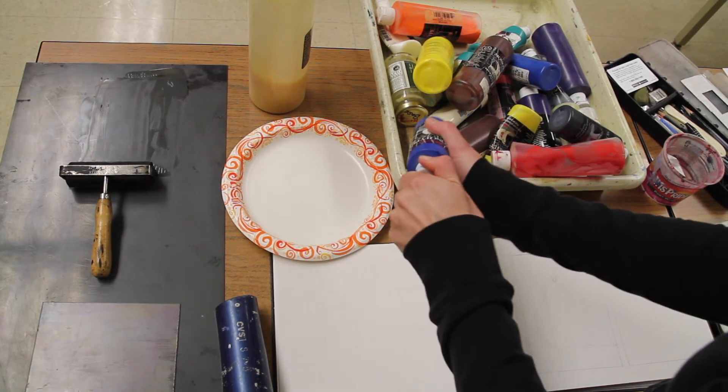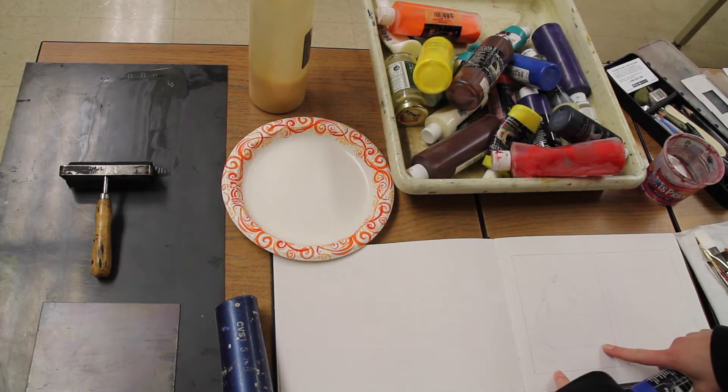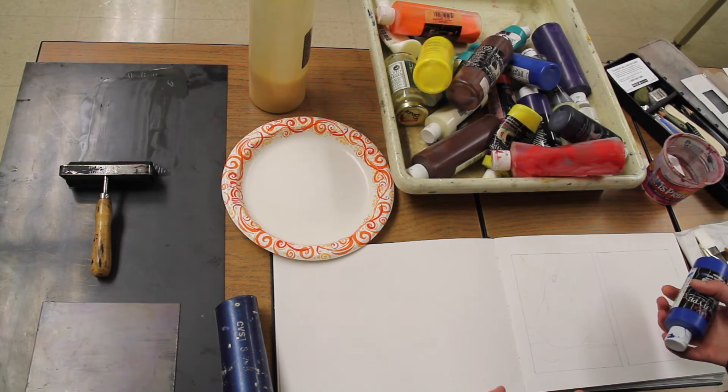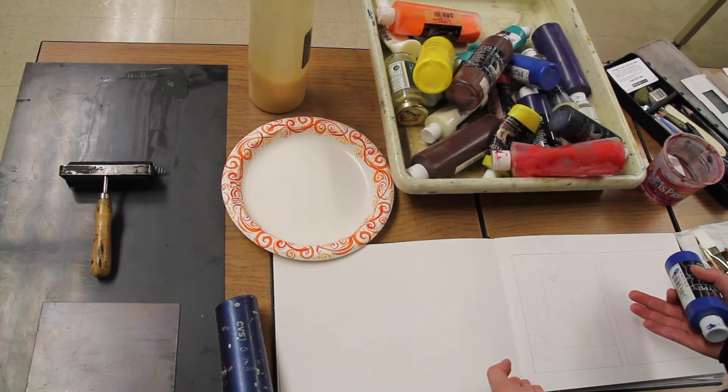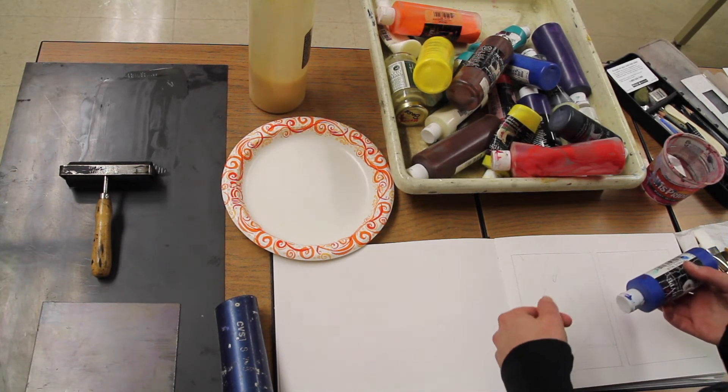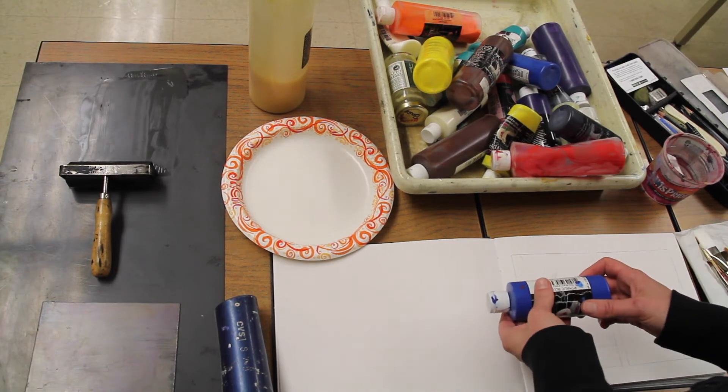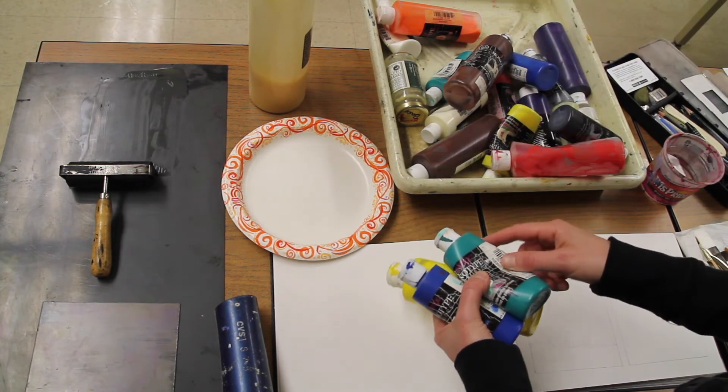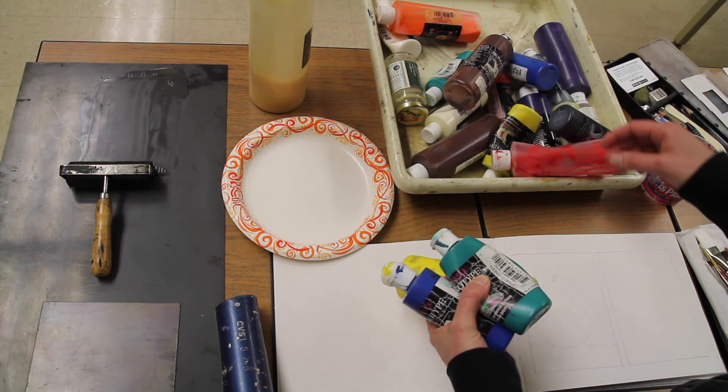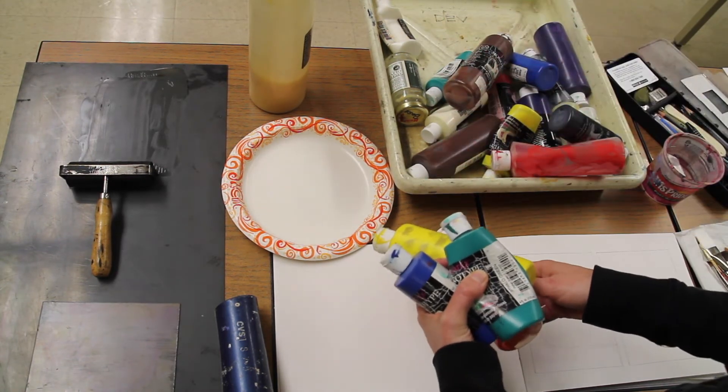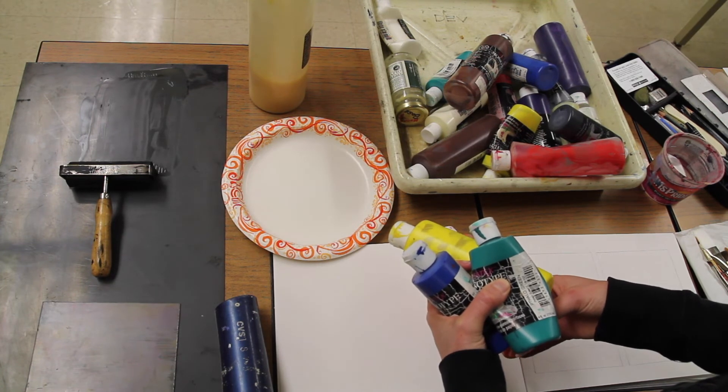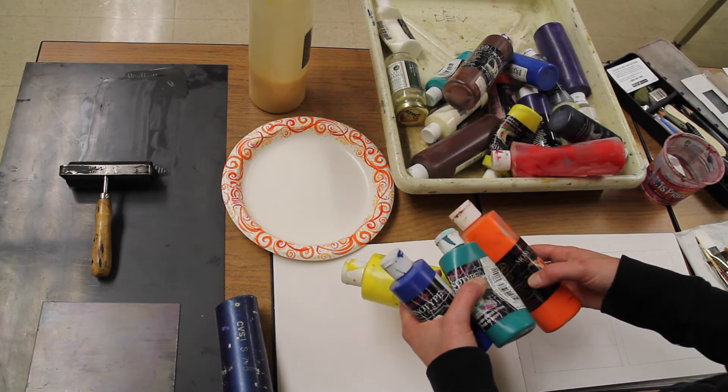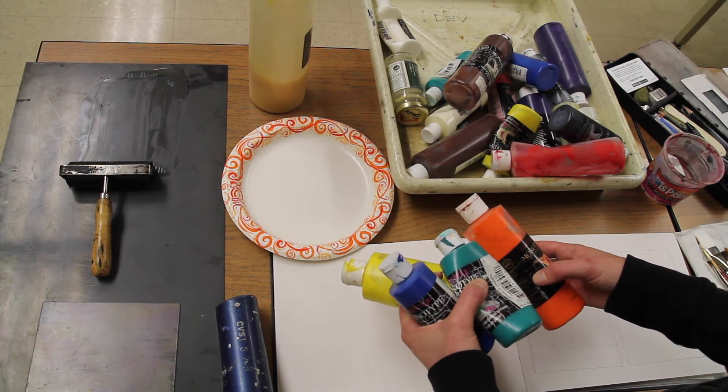I did sketch out a little pear for my monotype, so I'm doing something representational in this particular monotype, but you could do something abstract as well. For my pear, I'm going to squirt out some blue, some yellow, a little bit of green, and also some orange for the background with warm tones. I might do a little purple as well. I'm going to take a break, set up my palette, and then come back.